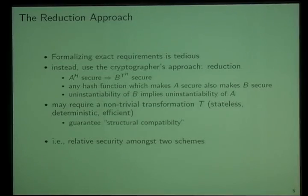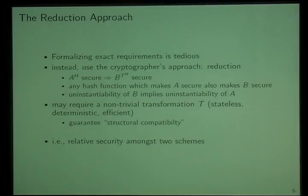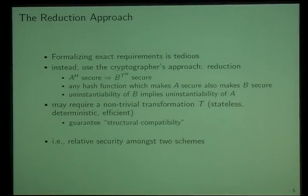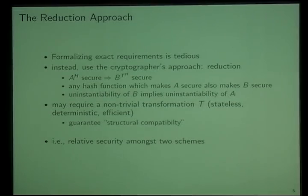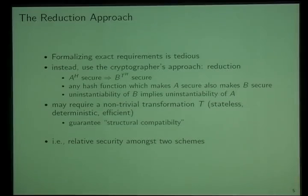You might have noticed this oracle T here, which we would like to view as a transformation function, because the random oracles of two schemes are not necessarily compatible — in one scheme we may want to have bit strings of a certain length, and in the other scheme we might work with group elements. So we slot in a transformation function that guarantees this structural compatibility. What we get with this notion is a relative security notion: we're not saying scheme A is secure, but if scheme A is secure with this hash function, then scheme B will be secure with this hash function as well.